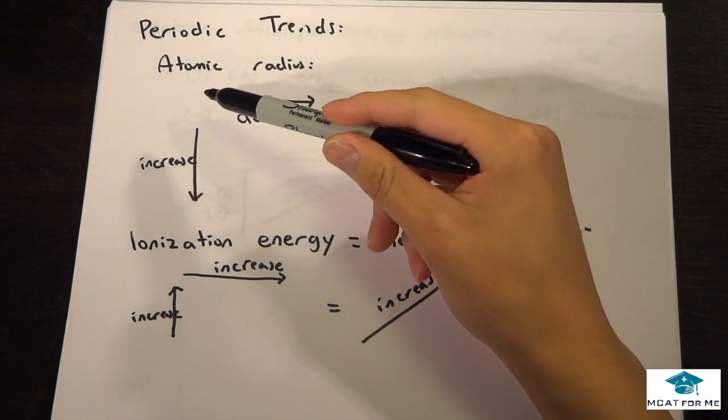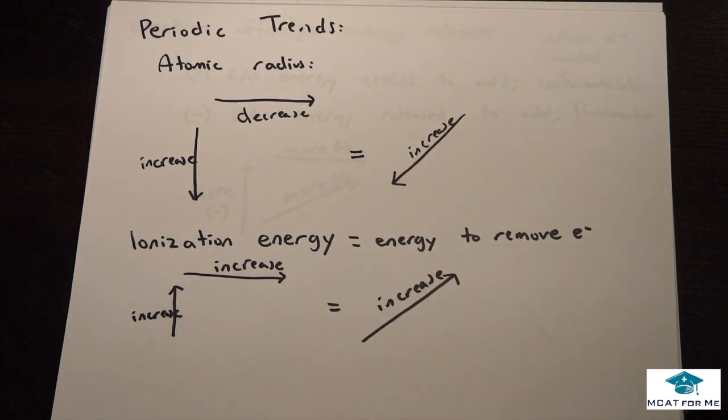So atomic radius, as you go right on the periodic table, it will decrease, atomic radius will decrease. And that's because every proton you add will increase the pull of all the electrons on the outside towards the nucleus because more positive.